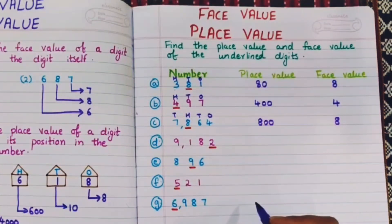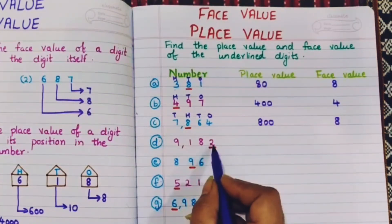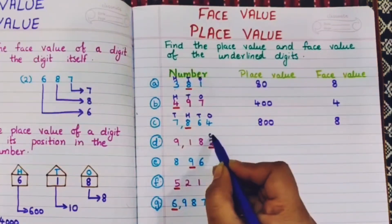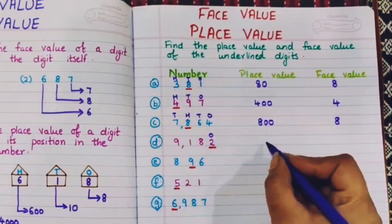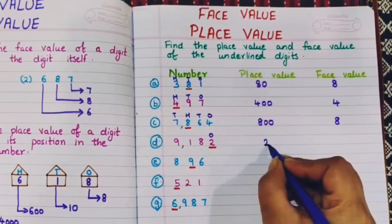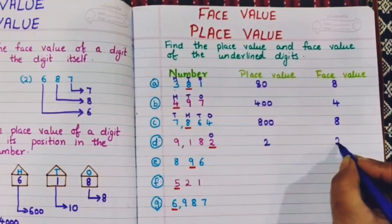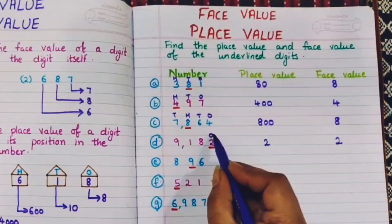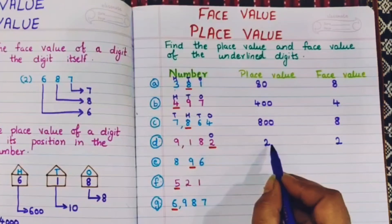Next, 9182. 2 is in the ones place, so the place value is 2 and the face value is also 2. Because it is in the ones place, we write only 2 as the place value.